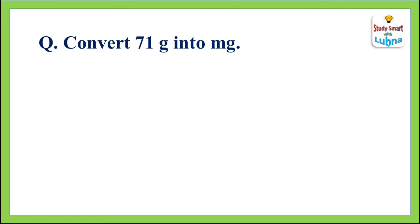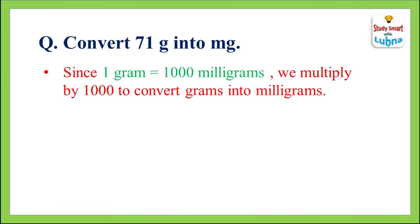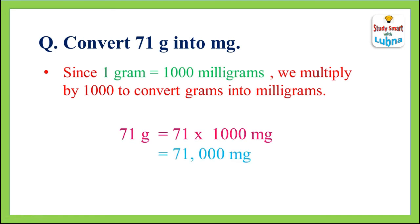Now we are going to convert grams into milligrams. In this question we have to convert 71 grams into milligrams. Since 1 gram is equal to 1,000 milligrams, we multiply by 1,000. We will multiply 71 by 1,000. After multiplying, we will get 71,000 milligrams. So 71 grams is equal to 71,000 milligrams.